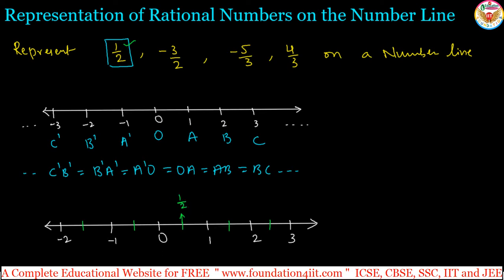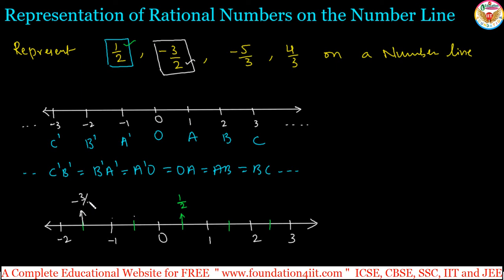Next, -3/2 is a negative number. The denominator is also 2, so the two-part divisions are already done between every pair of integers. The numerator is -3, meaning from 0 we go to the left side 3 points. Counting 1, 2, 3 to the left, this point is -3/2.